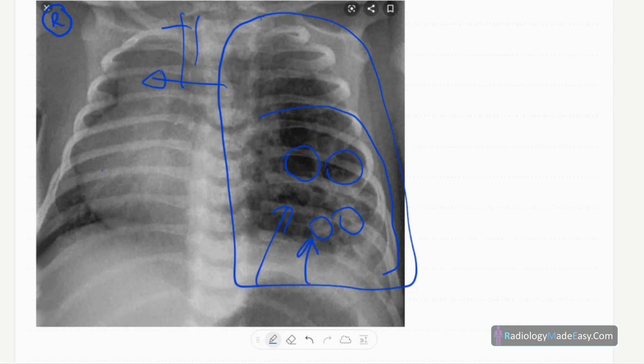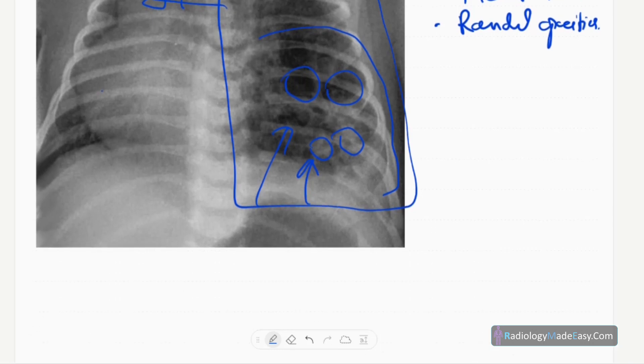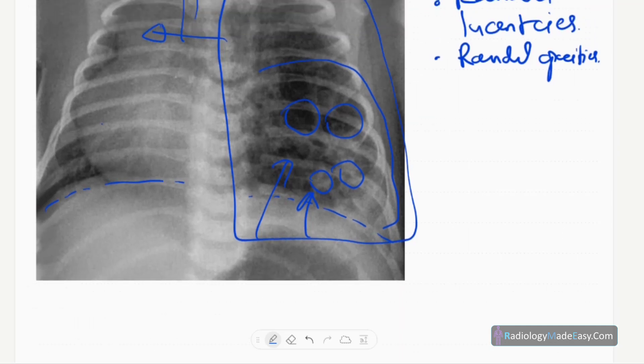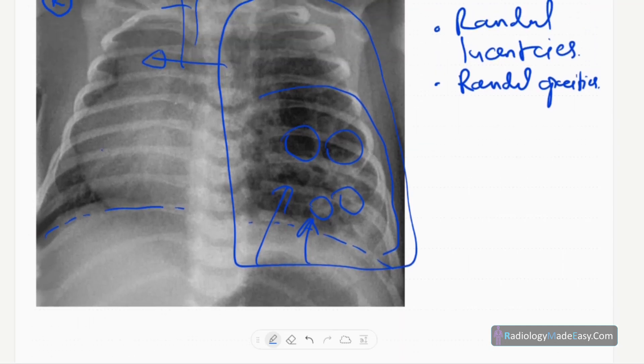There are multiple rounded lucencies and rounded opacities. However, you can see the intact diaphragm. No bony abnormalities, no right side pneumothorax, and no mediastinal masses.